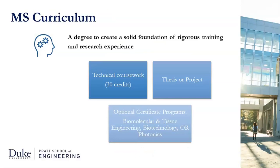The Duke BME Master of Science degree provides a solid foundation of rigorous training and research experience. It's comprised of technical coursework of 10 courses and a thesis or project in a chosen concentration. Master of Science students are also eligible to enhance their degree through training in our certificate programs in Biomolecular and Tissue Engineering, Biotechnology, or Photonics. Faculty advisors provide mentorship, and Duke offers career services to prepare you to seek a career in industry or enter a doctoral program.